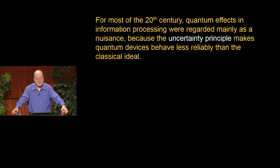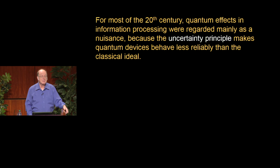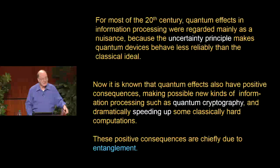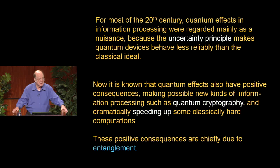Most of the 20th century passed where quantum effects were understood—you needed quantum theory to design transistors—but they were regarded from the point of view of information processing as a nuisance, because they caused these tiny microscopic devices to become less reliable due to the uncertainty principle. But toward the end of the 20th century, it was understood that quantum effects have positive consequences, making possible new kinds of information processing like quantum cryptography and dramatically speeding up some classically hard computations.